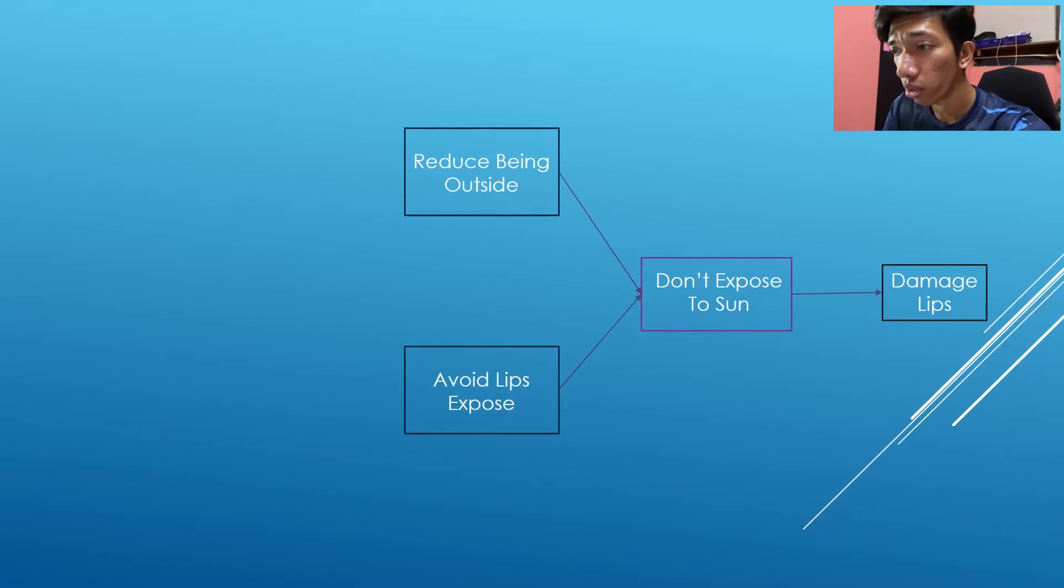For the first concept, we have these ideas that can help to reduce being exposed to the sun. The first idea is work from home. By working from home, we don't have to go through work and be exposed to the sun to walk there.